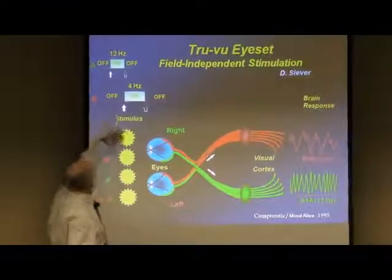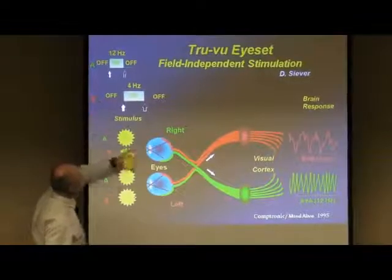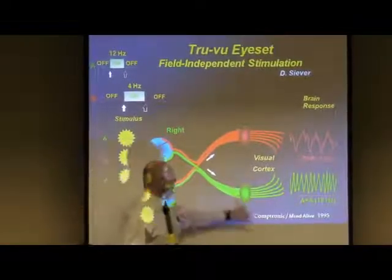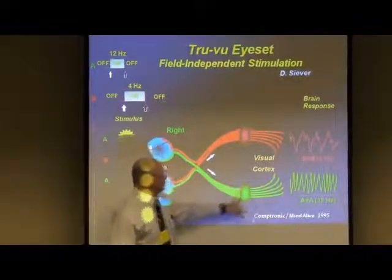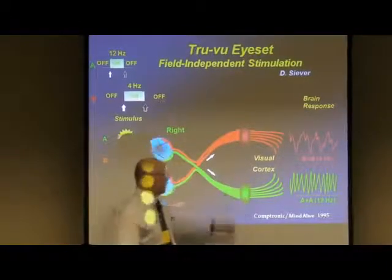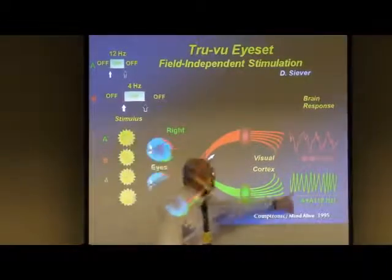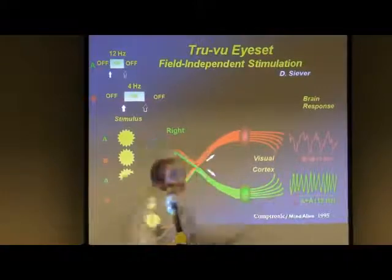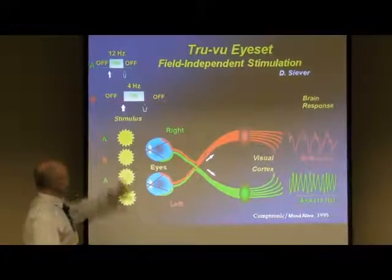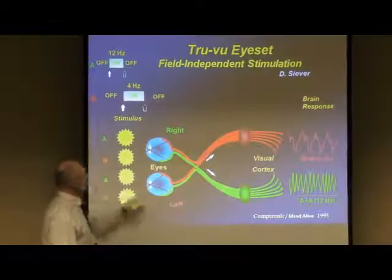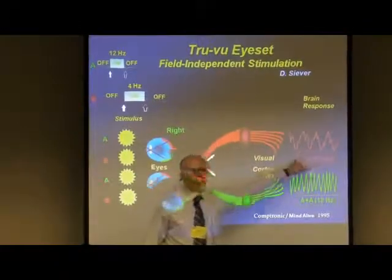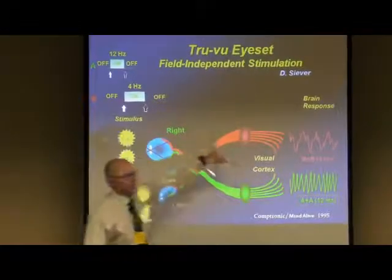So we've got stimulus A, which is a fast stimulus, running through and hitting the left retinas, zipping down to the left geniculate and thalamus, generating itself on the left side. Here is an example of a slower frequency, frequency B, going across to the right-hand side. So you can actually do two different frequencies.